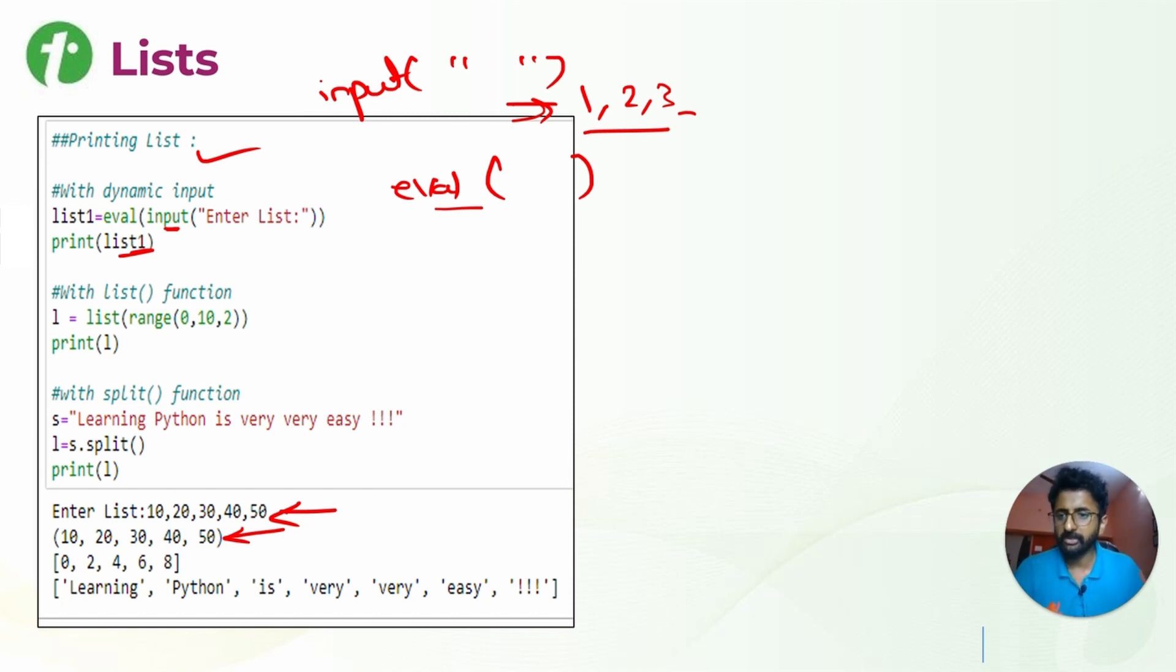Another one is the list function. In type casting we have seen int, str - we can also convert the direct input to list. For example, I am taking 10 elements from 0 to 9 and converting them into a list, and that list is stored in a variable named l. When I print it, I get the output. Here I have taken range of 0 to 10 with two steps, so 0, 2, 4, 6, 8 until 9 will be printed.